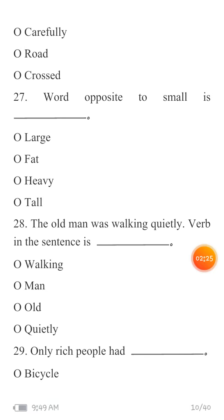MCQ 28: 'The old man was walking quietly.' You have to identify the verb — what is the action in this sentence, what is happening? Your options are: walking, man, old, and quietly. MCQ 29: 'Only rich people had blank.' Your options are: bicycle, cars, aeroplane, or bus.